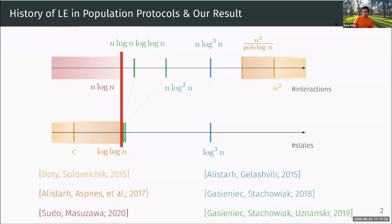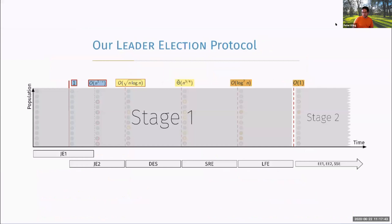Our main contribution is basically to close this gap. We show that you can come up with a leader election protocol in this model that achieves optimal time and optimal space simultaneously. The protocol consists of many sub-protocols that delicately interact with each other, and let me give one example of a property that is new to our protocol.